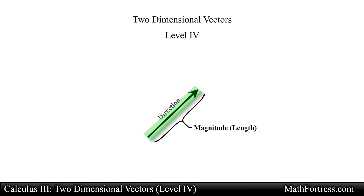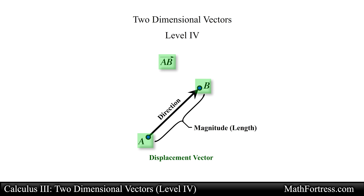We will be using the geometric representation of a vector to illustrate various vector operations geometrically. You can think about this vector as representing the displacement of a particle that starts at one point, the initial point like point A, and ends at the second point, the terminal point like point B. This type of vector is referred to as a displacement vector in physics. This vector can be denoted by using the initial and terminal point with an arrow on top as vector AB, or we can also name the vector by using a single bold face letter with an arrow on top.